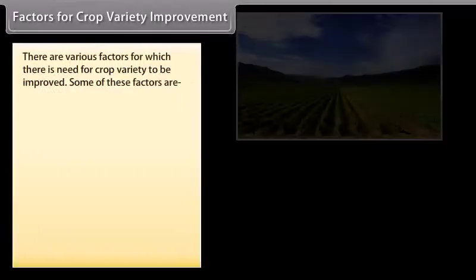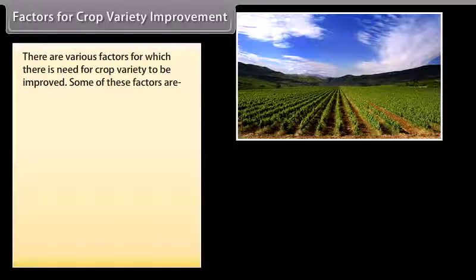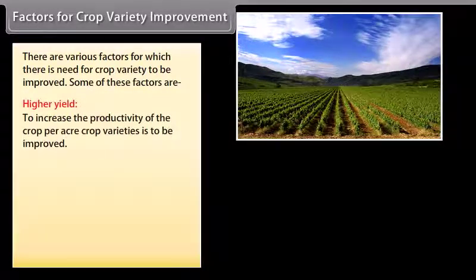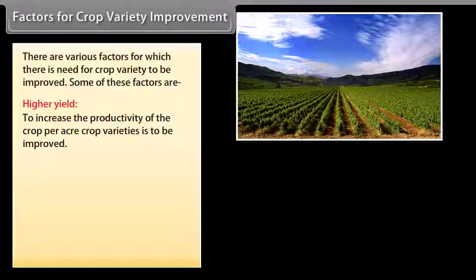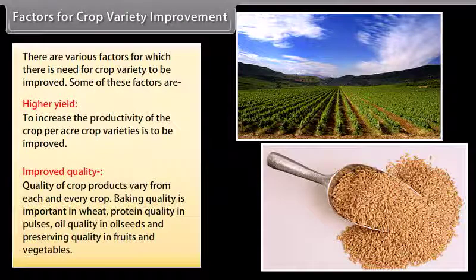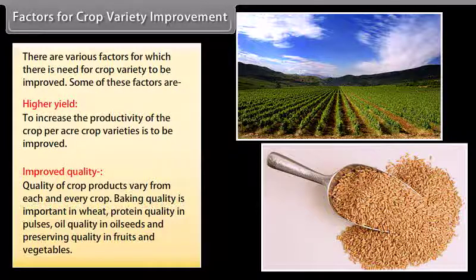There are various factors for which there is need for crop variety improvement. Higher yield — to increase the productivity of the crop per acre, crop varieties need to be improved. Improved quality — quality of crop products varies from crop to crop. Baking quality is important in wheat, protein quality in pulses, oil quality in oil seeds, and preserving quality in fruits and vegetables.